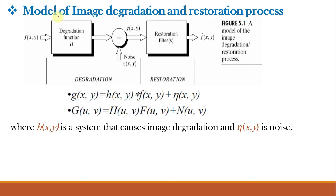Let f(x,y) be the original image before degradation. A degradation function H gets convolved with this original image, and then additive noise eta(x,y) is added, resulting in the degraded image g(x,y). Given g(x,y), some knowledge about the degradation function H, and some knowledge about the noise term eta(x,y), the objective of restoration is to obtain an estimate f-cap(x,y) of the original image, as close as possible to f(x,y). The more we know about H and eta, the closer f-cap will be to f(x,y).